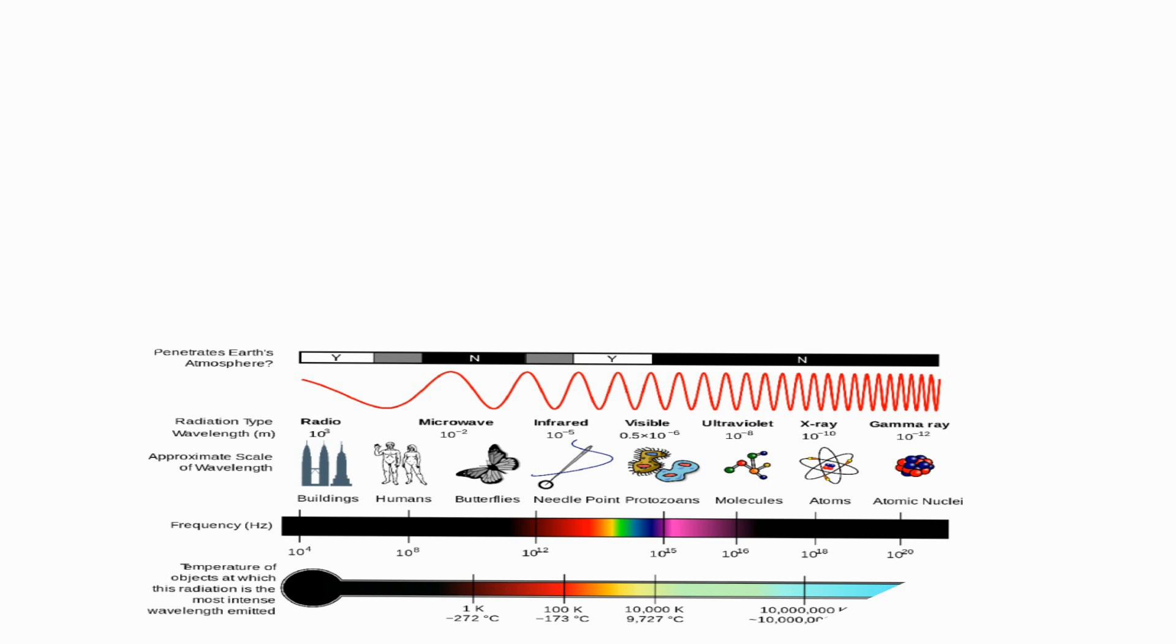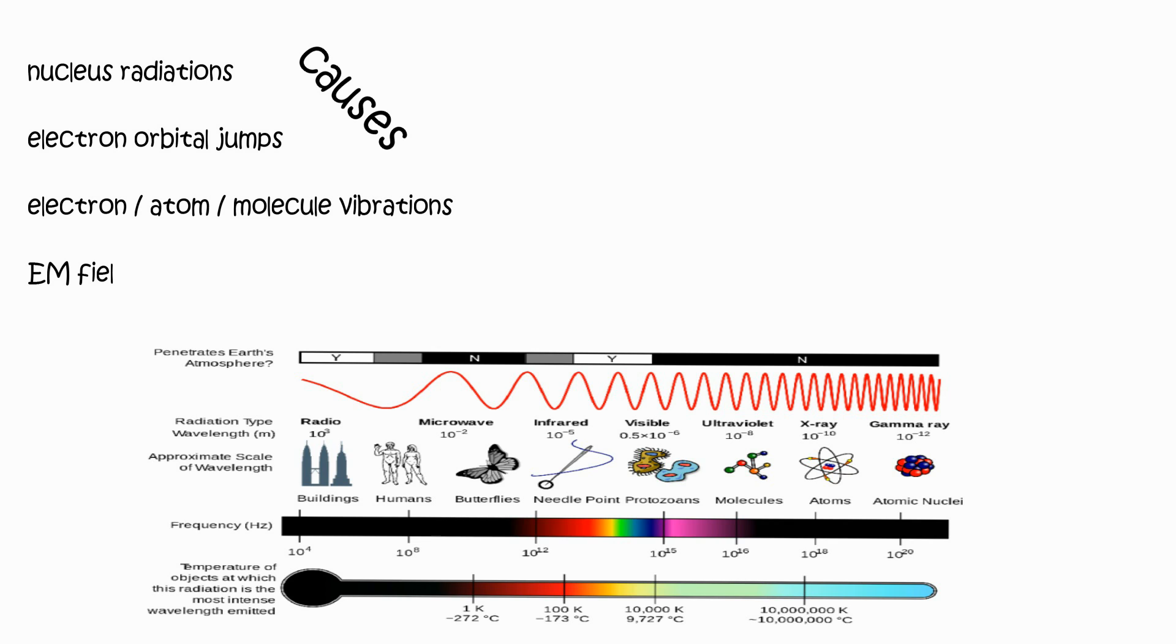Electromagnetic spectrum. Nucleus radiations have the highest frequencies, followed by emissions from electron orbital jumps, then atom or molecule vibrations. Finally, electromagnetic field oscillations have the lowest frequencies.